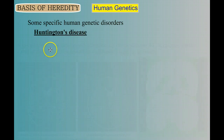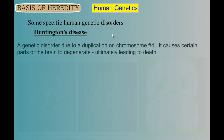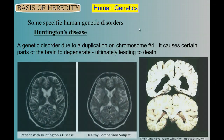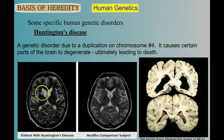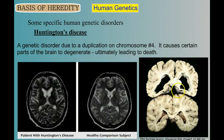Huntington's disease is a genetic disorder due to a duplication on chromosome number four. It causes certain parts of the brain to degenerate and ultimately leads to death. Here are brain scans of a patient with Huntington's disease compared to a healthy subject — the dark areas are where neurons have degenerated. Over here is a more stark example: a slice of the brain where you can see there's just less brain tissue. This is a pretty advanced Huntington's patient, and eventually it leads to death.